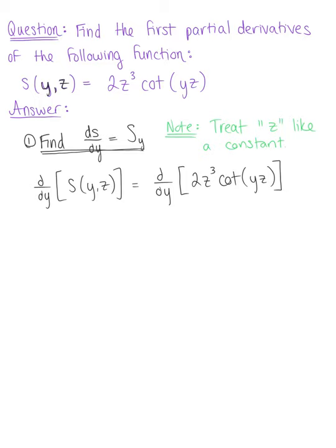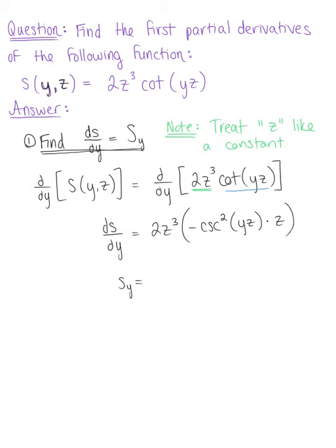We can observe that 2z cubed is a constant here, so we can pull that out in front just like you would with a real number. So the partial derivative of s with respect to y equals 2z cubed, multiplied by the derivative of cotangent of yz. The derivative of cotangent gives us minus cosecant squared of yz, and then we multiply by the derivative of the inside, which is just the constant z. So the derivative of s with respect to y is minus 2z to the fourth times cosecant squared of yz.